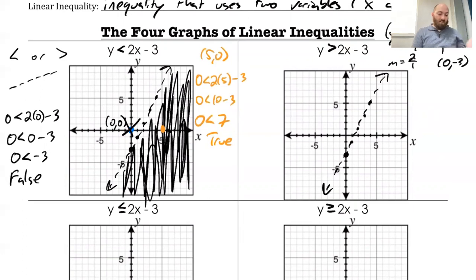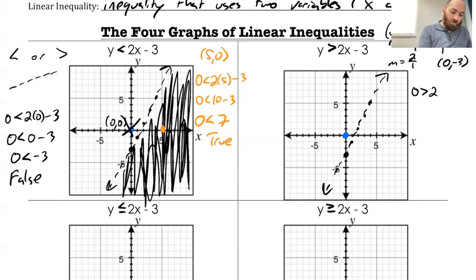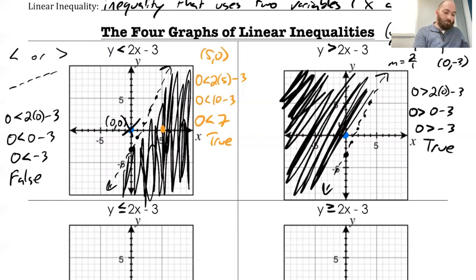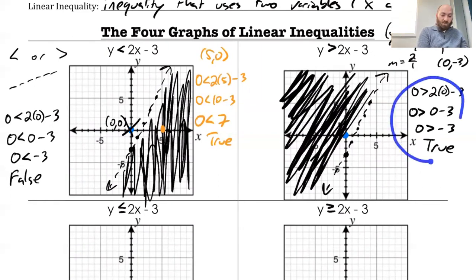When I look at the next one — y is greater than 2x minus 3 — I can do the same process. If I'm unsure, I'm going to pick a test point like (0, 0) and plug it in. Is 0 greater than 2 times 0 minus 3? So 0 greater than 0 minus 3 — is 0 greater than negative 3? That is a true statement. Since that's a true statement, this is part of the solution set, meaning this is my shaded region on this side of the line.